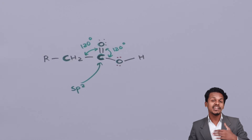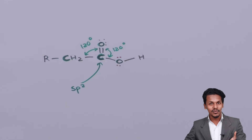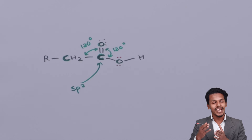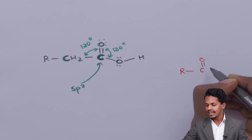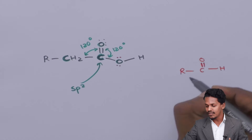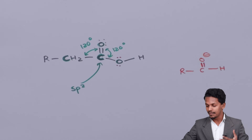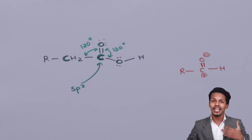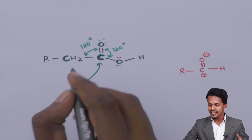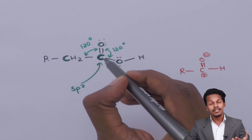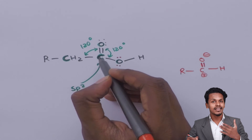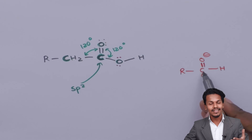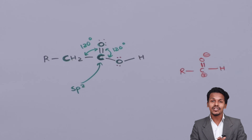Due to this delocalization of electrons, the carbon in the carboxyl group is less electrophilic compared to that in aldehyde or ketone. In an aldehyde, the oxygen is partially negative, making the carbon partially positive and more electrophilic. But in carboxylic acid, the second oxygen undergoes electron delocalization, making the carbon less electrophilic compared to an aldehyde. This was the structure of the carboxyl group in carboxylic acid.